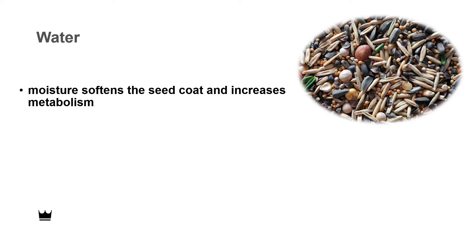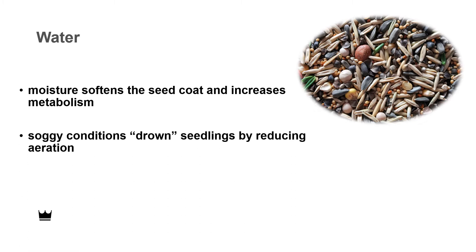Water is necessary because it softens the seed coat and increases metabolism. The developing roots also need moisture, but soggy conditions can essentially drown the seedlings by reducing proper aeration. A process called damping off, caused by fungi that rots roots, can occur if the roots are too wet.